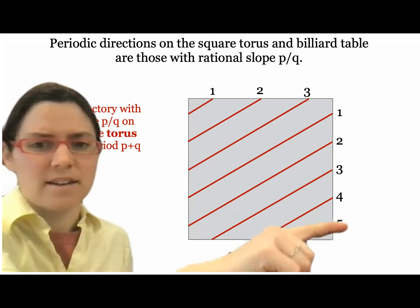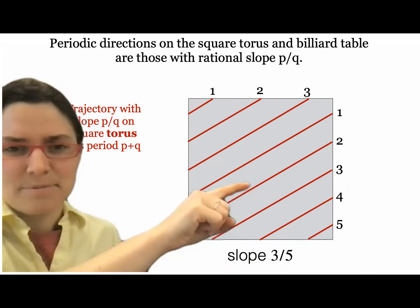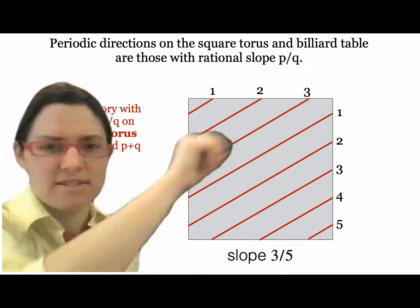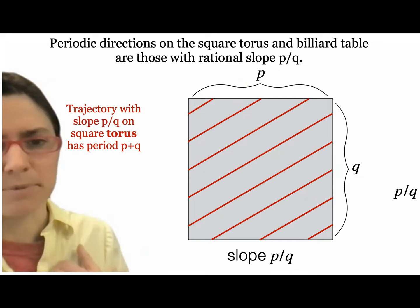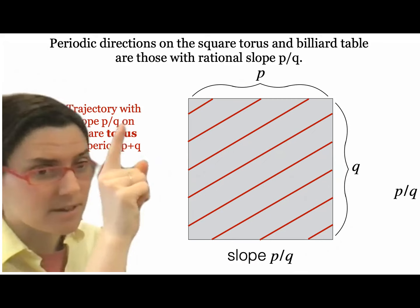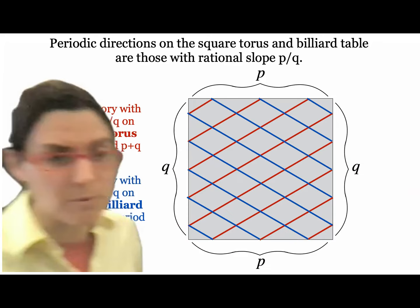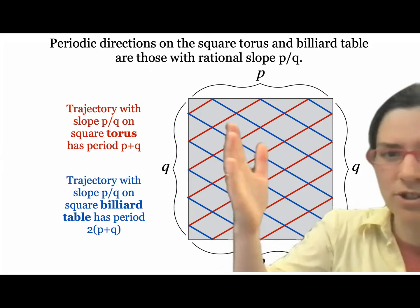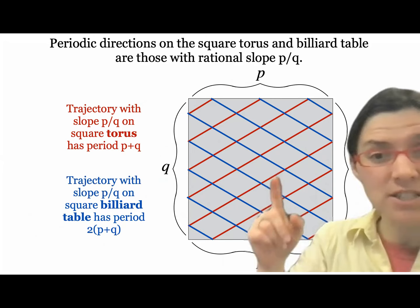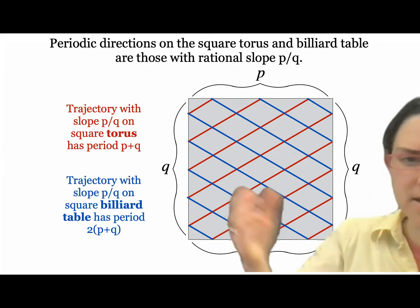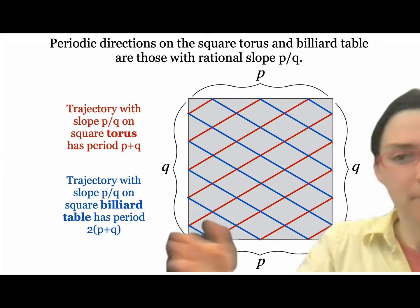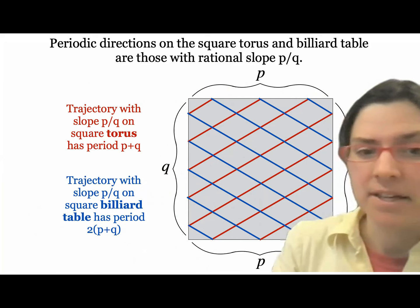This path goes across, and it ends up hitting at a total of p plus q times — in this case three plus five. For slope p over q in lowest terms — lowest terms is important and will come up again — the path hits p plus q times. Here's a clever trick: take a square torus trajectory and flip it to create two copies, turning it into a billiard trajectory. By construction, the angle of incidence equals the angle of reflection, and it hits the top and bottom p times and left and right q times. So the trajectory of slope p over q has period two times p plus q. A beautiful, simple result.